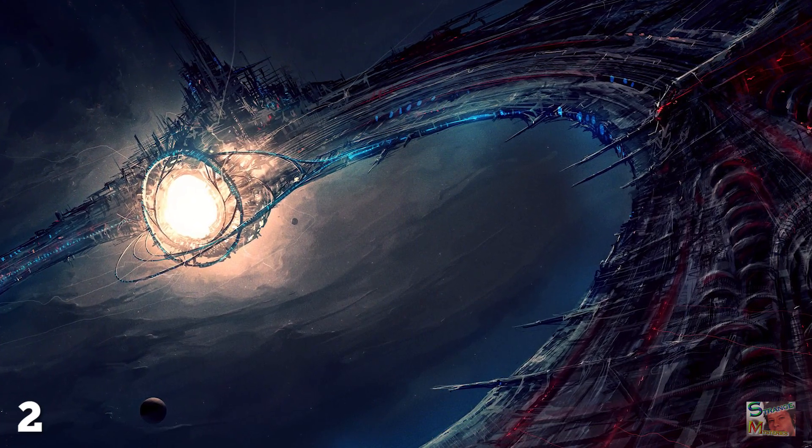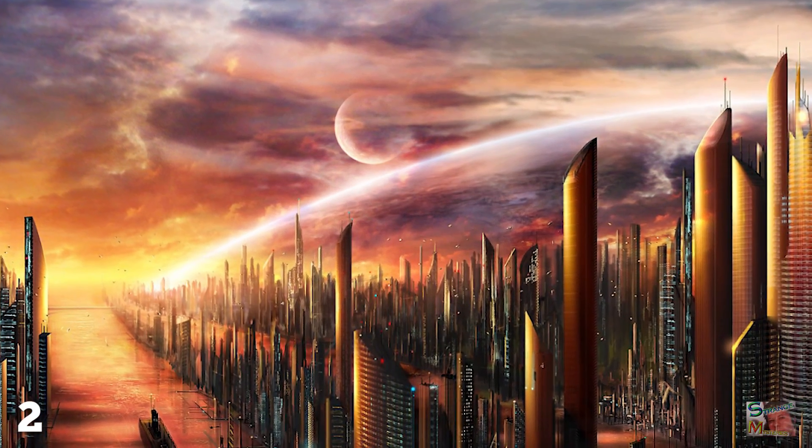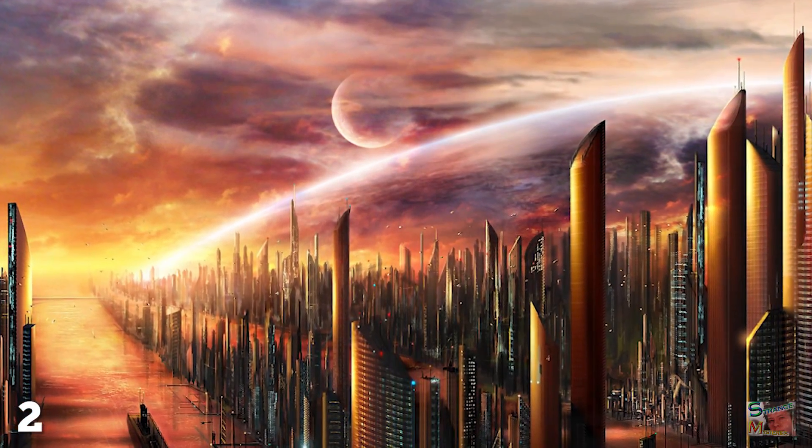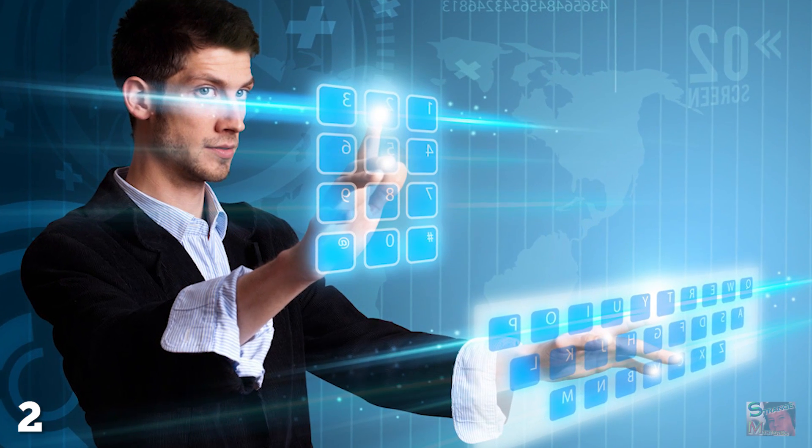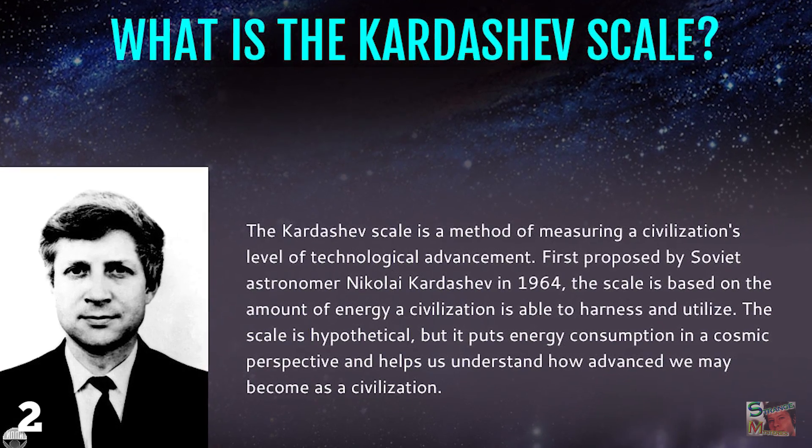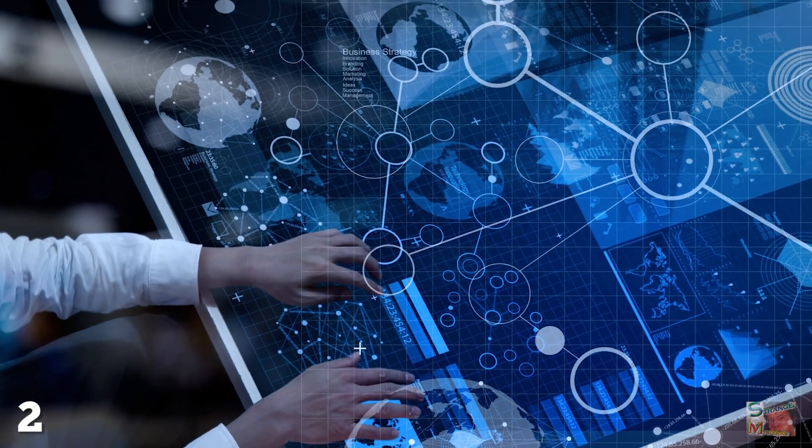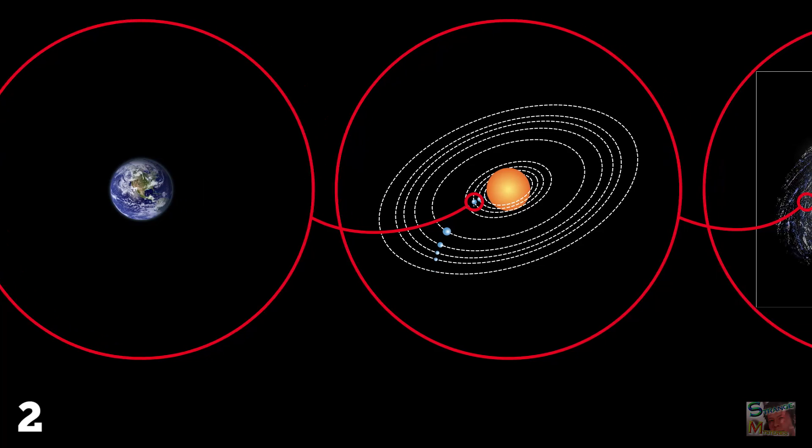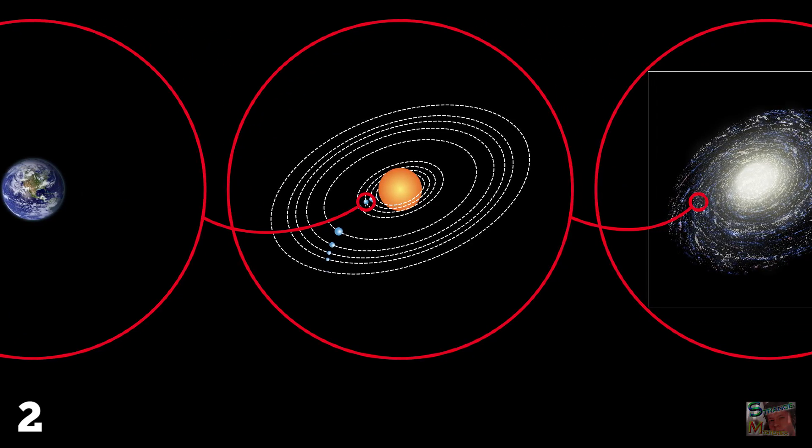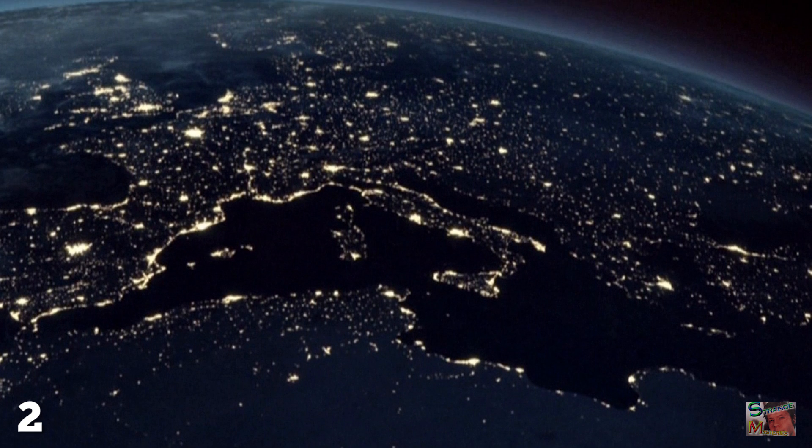Number two: Technology. To imagine what a billion year advanced civilization may look like, we must first consider where we humans are technologically and where we're likely to be in the future. To do this, we can use the Kardashev scale, a method of measuring a civilization's technological level based on the amount of energy it can harness. This scale was developed in the 1960s by Russian astrophysicist Nikolai Kardashev.